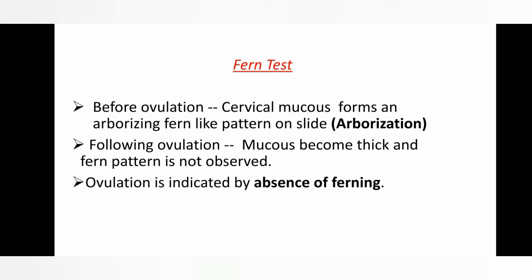The next indicator is the fern test — a very important indicator of ovulation. It is based on the phenomenon that before ovulation, during the proliferative phase when estrogen is high, the cervical mucus forms an arborizing fern-like pattern when spread on a slide. This process is called arborization. Following ovulation, during the secretory phase, the mucus becomes thick due to high progesterone and the fern-like pattern is not observed. Therefore, ovulation is indicated by the absence of ferning. This figure represents the microscopic view of the fern pattern.